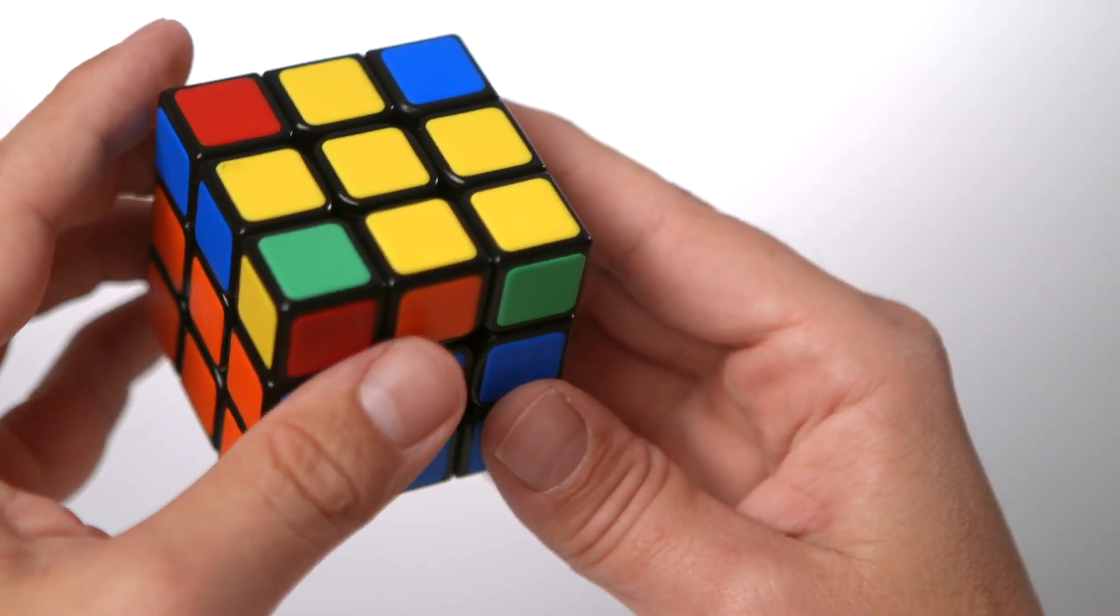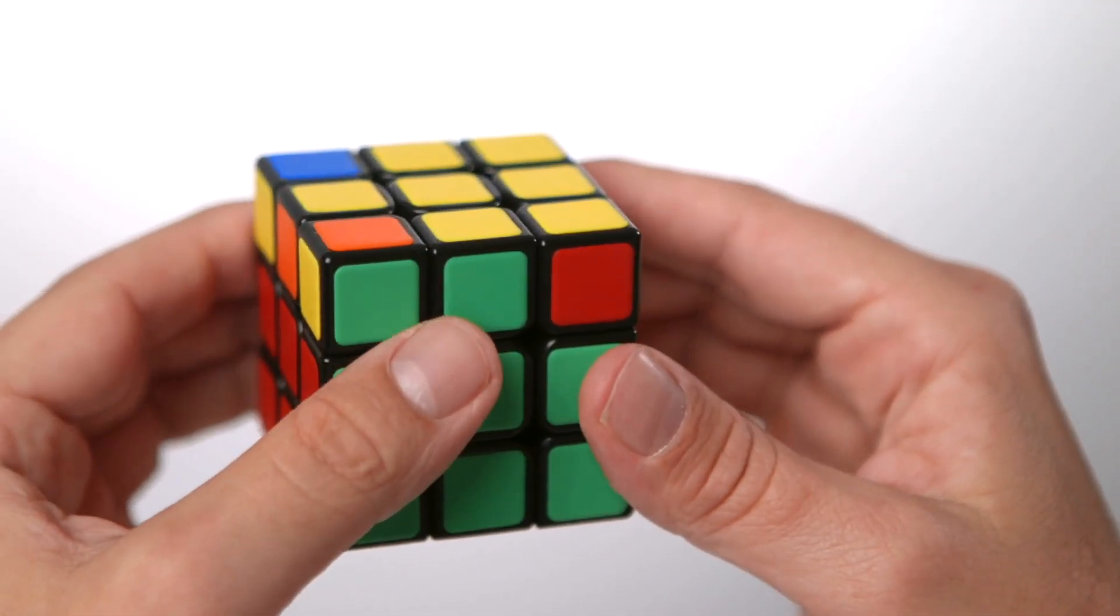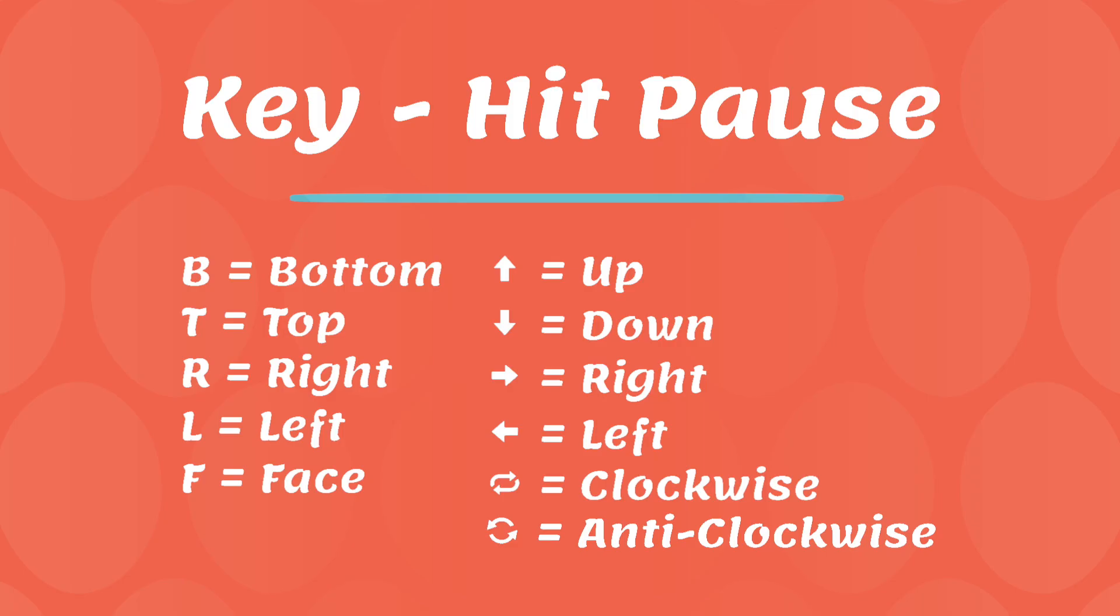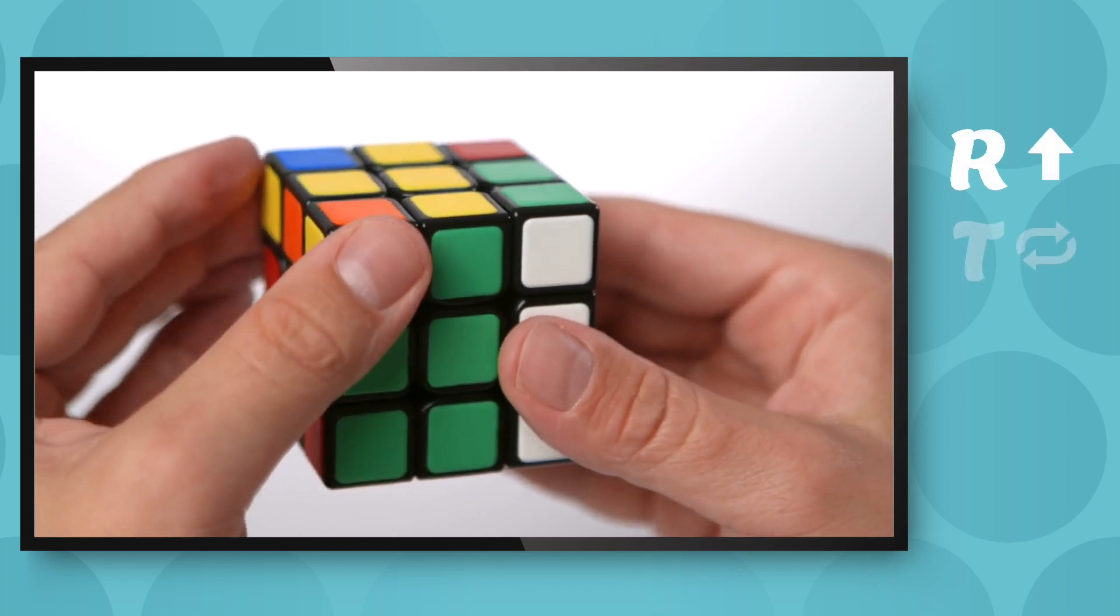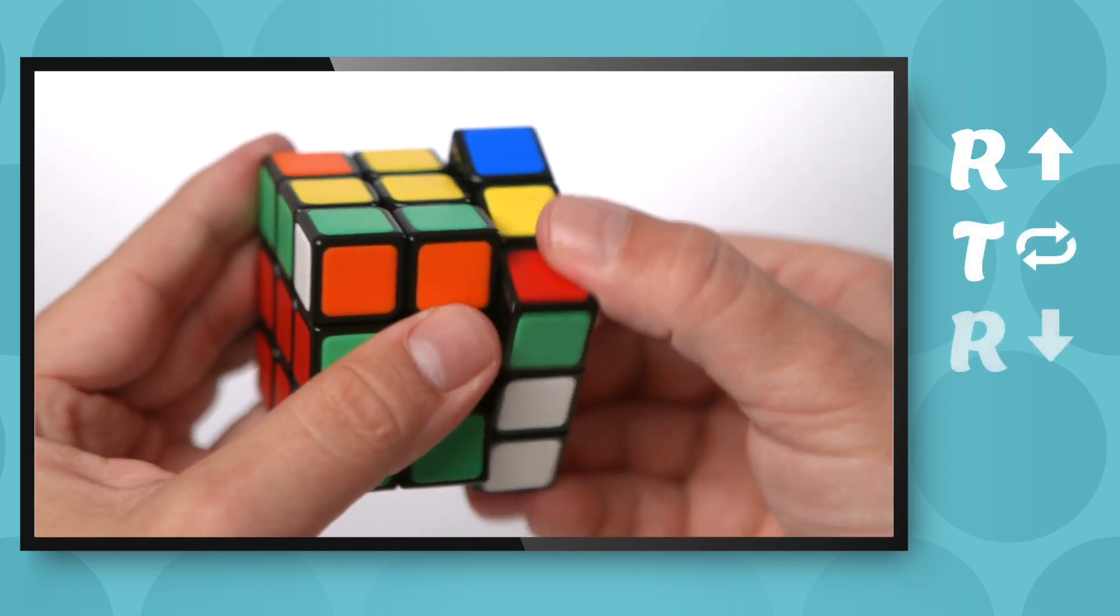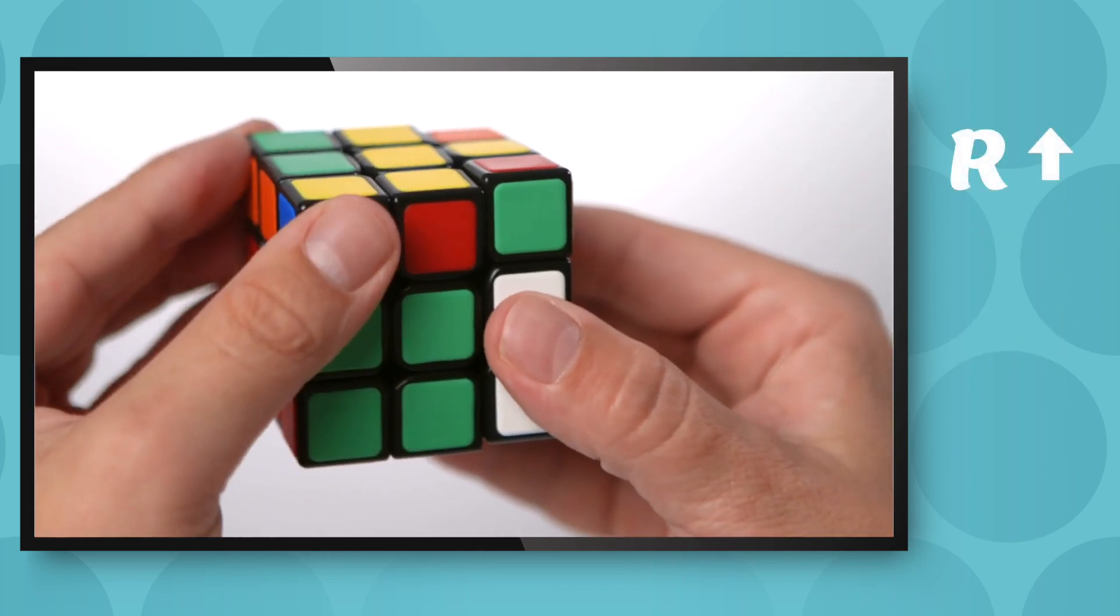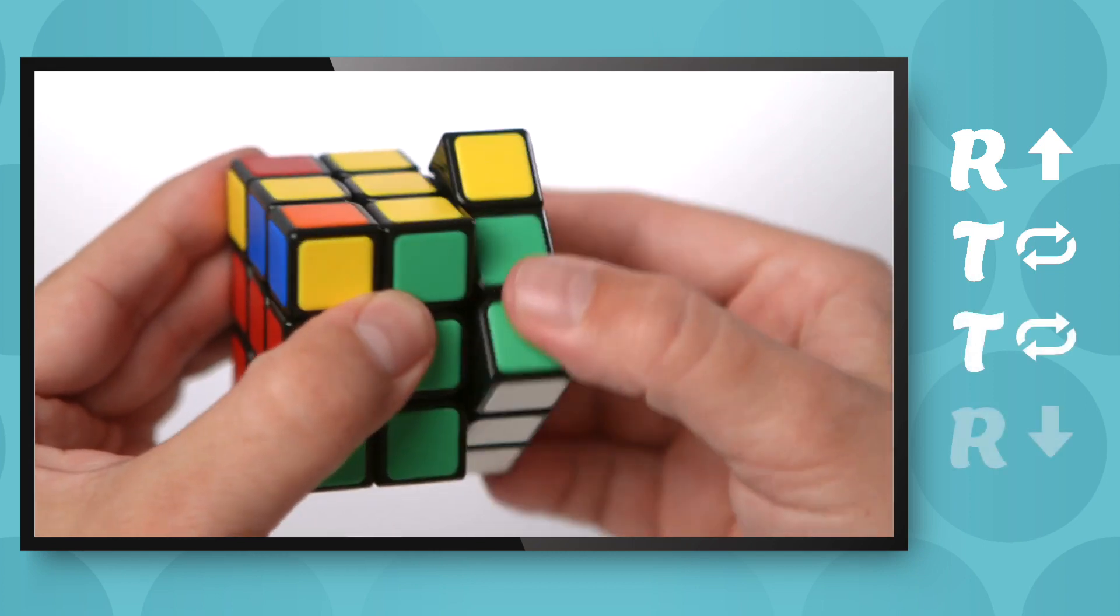Let's look at the tank. Here's the tank pointing to the left. So we put the yellow on top and we do that same move. But this time we're going to use the official algorithm. Right up, top clockwise, right down, top clockwise, right up, top clockwise, top clockwise, right down.